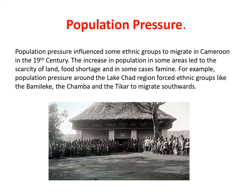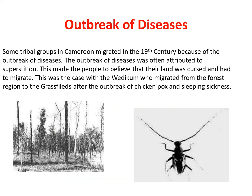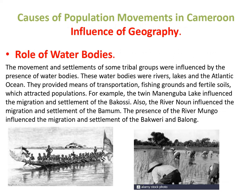The Bakweri migrated to the foot of Mount Cameroon to exploit the rich volcanic soil for agriculture. The migration and settlement of the Bamileke in the Mbo plains was also due to the need for fertile soil. Regarding hunting opportunities, ethnic groups that carried out hunting expeditions migrated in search of areas with abundant game. For example, the Bakweri migrated to the foot of Mount Cameroon to hunt abundant wild animals there, and the Pygmies settled in the forest areas because of the wild animals found there.